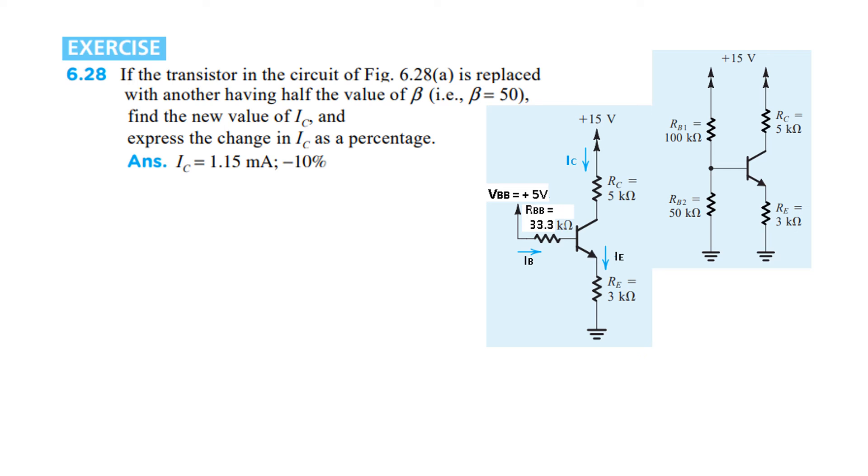Let's come to exercise 6.28. If the transistor is replaced with another having half the value of beta, that means beta is 50 in this case. Find the new value of Ic and express the change as percentage. We take the equation from the previous question with beta changing to 50. Everything remains the same, just beta is 50 now. Simplifying, Ie = 1.177 milliamperes.